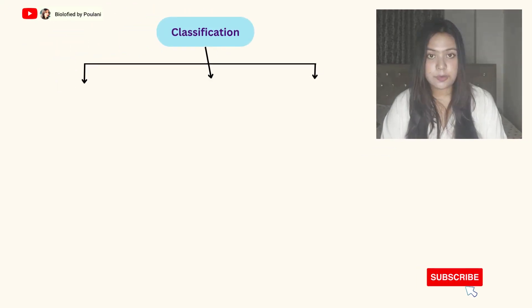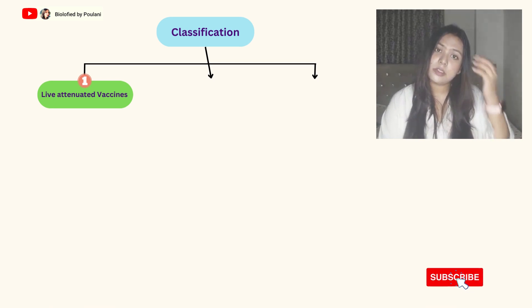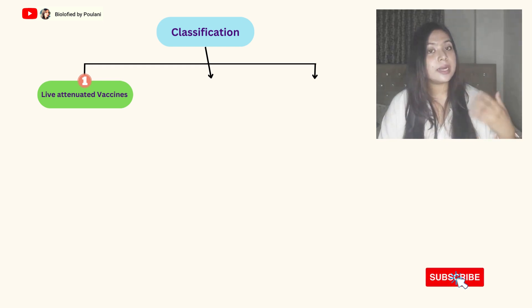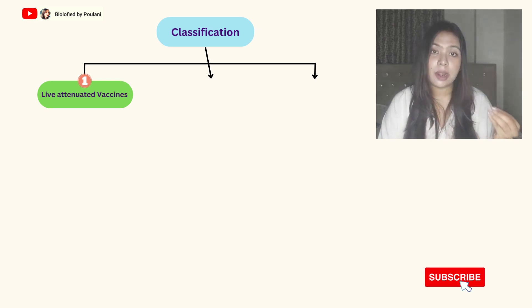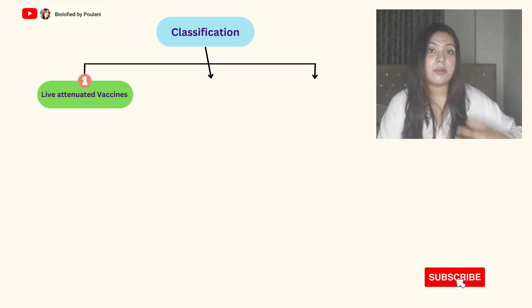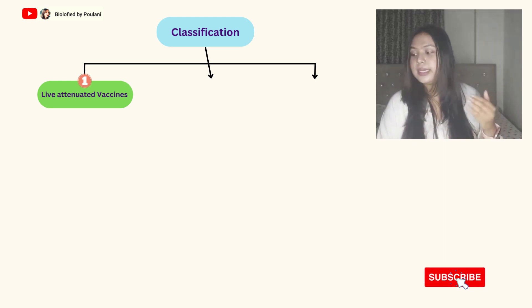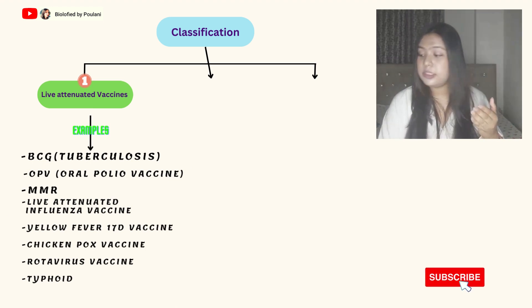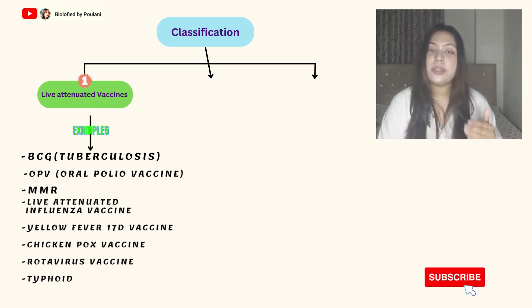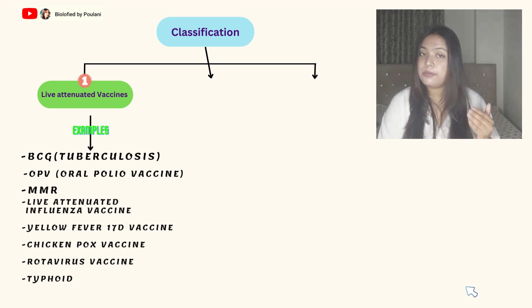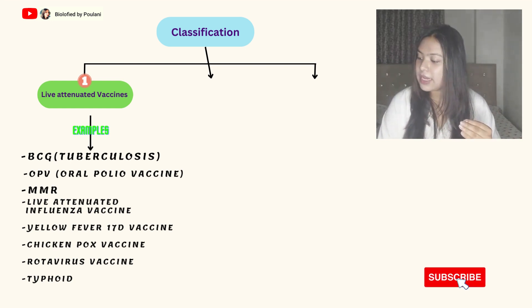This slide talks about the classification of vaccines. First are live attenuated vaccines. In these vaccines, the pathogen multiplies in our body and our body releases antibodies against it, helping provide immunization against particular viral diseases. These are considered much more powerful than other types of vaccines. Under this category come BCG, which protects against tuberculosis; oral polio vaccine (OPV); MMR; live attenuated influenza vaccine; yellow fever 17D vaccine; chickenpox vaccine; rotavirus vaccine; and typhoid vaccine.